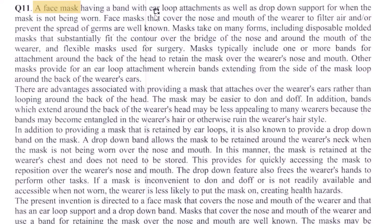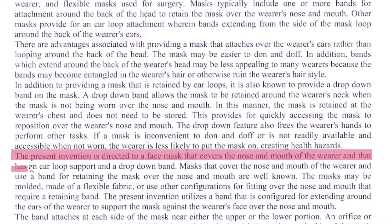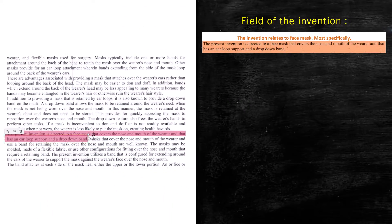This disclosure doesn't provide us with that help directly. Going down, we see the mention of the present invention: 'The present invention is directed to a face mask that covers the nose and mouth of the wearer and that has an ear loop and a drop down bag.' This is our invention — the hybrid feature with loop support as well as the drop down bag. So we say the invention generally relates to a face mask, and more specifically it is directed to a face mask that covers the nose and mouth of the wearer and that has an ear loop support and drop down bag. This becomes our Field of Invention.